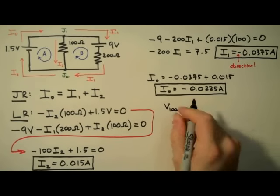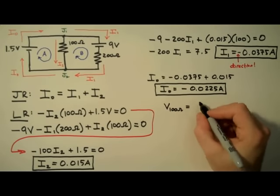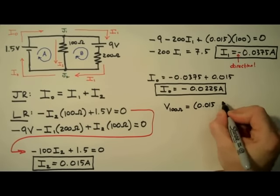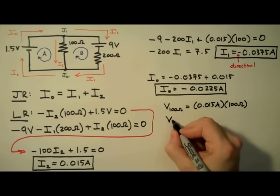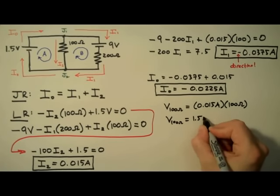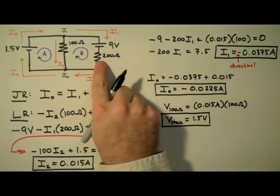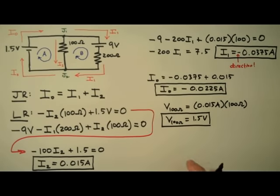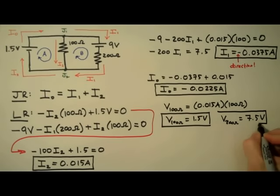Now that we have the currents in this circuit, we can determine the voltage drops across the resistors using the current and resistance values — in other words, we're going to use Ohm's law. For the 100 ohm resistor, we use the 15 milliamp value and the 100 ohm value, and we find that the voltage drop is 1.5 volts. Using that current and the 200 ohm resistor, we have a value of 7.5 volts for the voltage drop across the 200 ohm resistor.